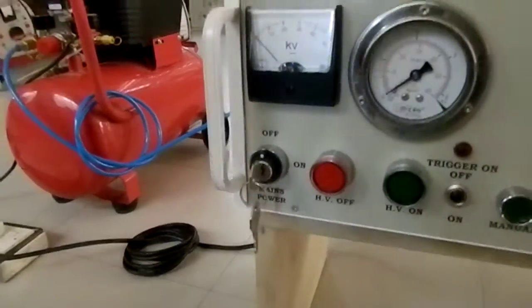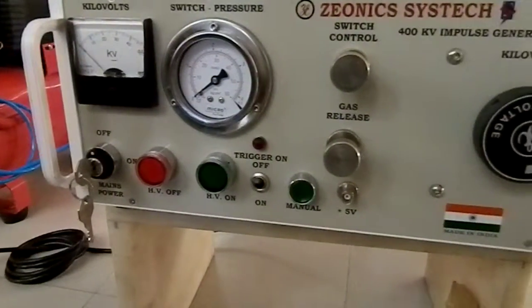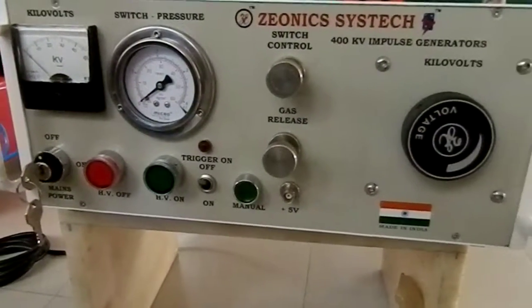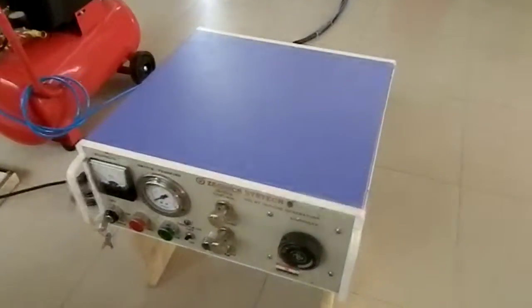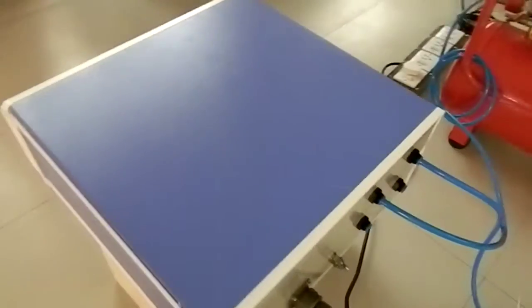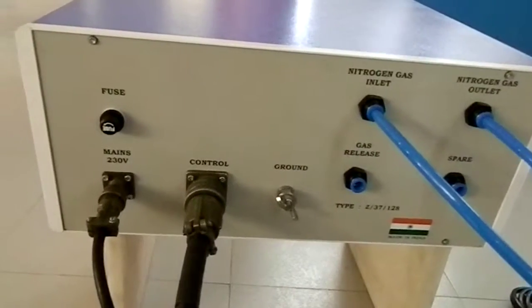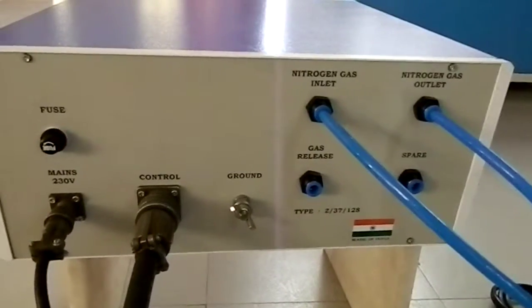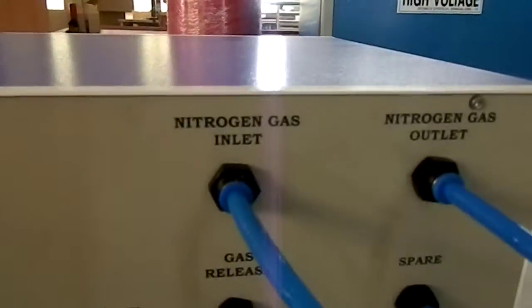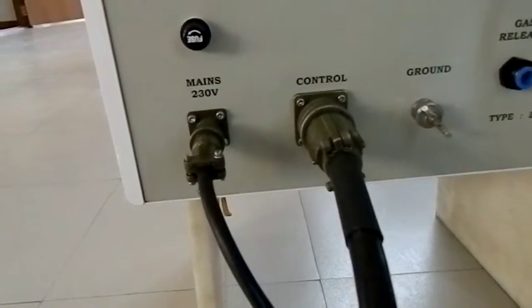The control panel consists of the following controls: the key switch to switch on the high voltage, on-off switch, the pressure gauge, the trigger on-off switch control, and the gas release as well as the high voltage buildup area. The rear panel consists of control voltage, nitrogen gas outlet, nitrogen gas inlet, ground connection, control connection, and mains input.